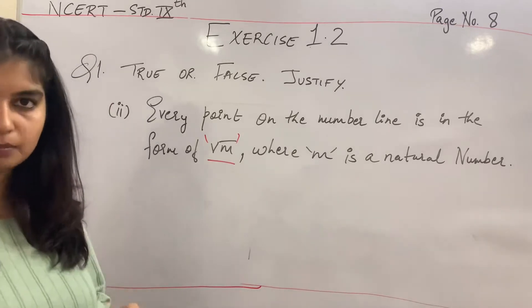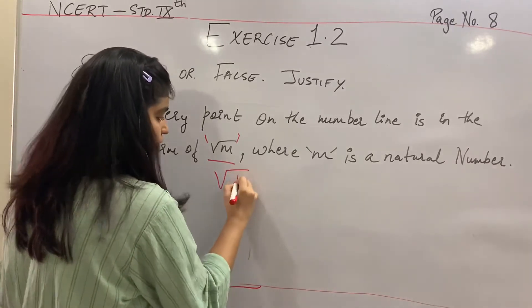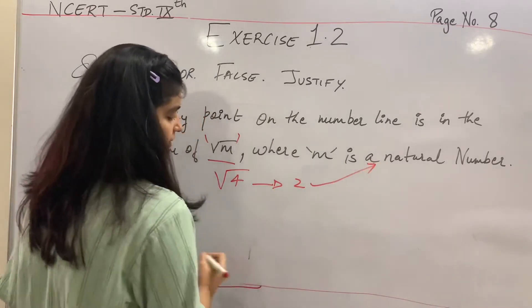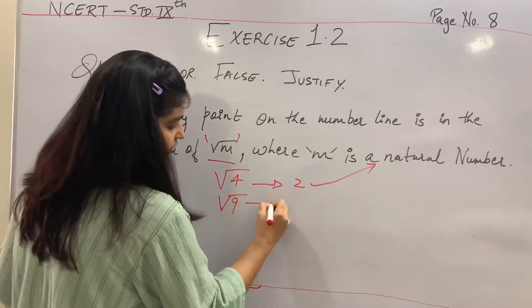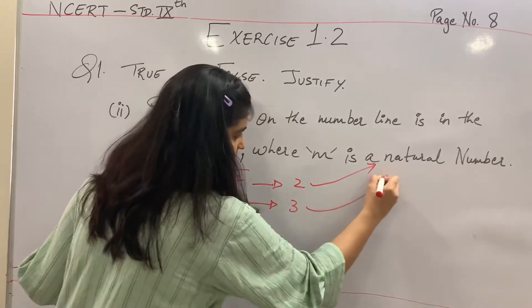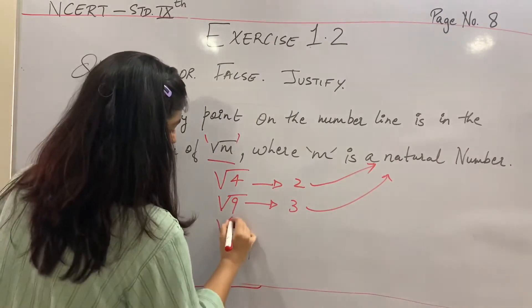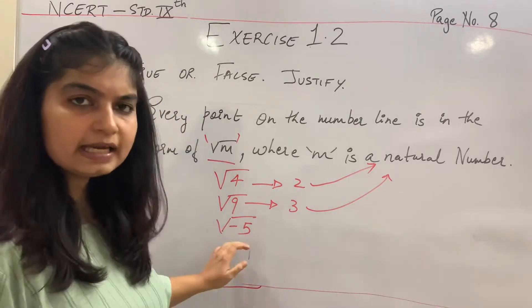Abhi hum koi example le lete. Suppose root 4, so woh kya banta hai? 2, yes of course it's a natural number. Then agar hum lete hain root 9, toh kya banta hai? 3, yes it's a natural number.